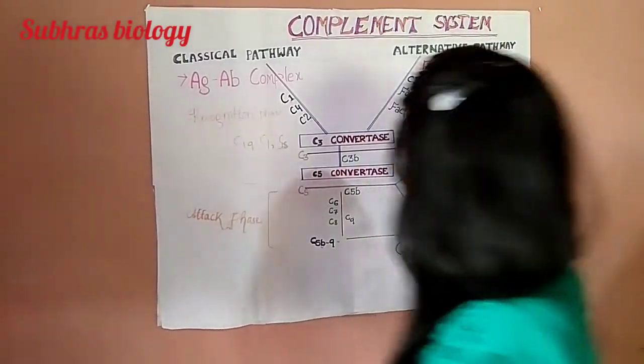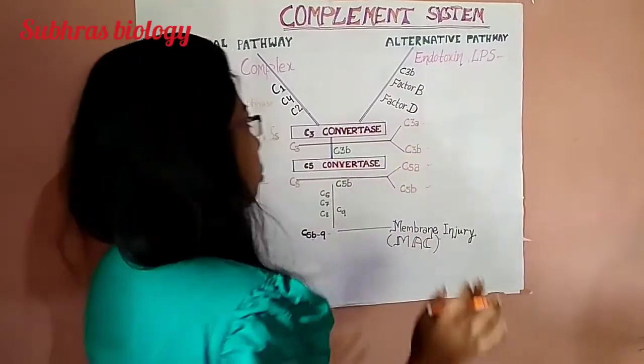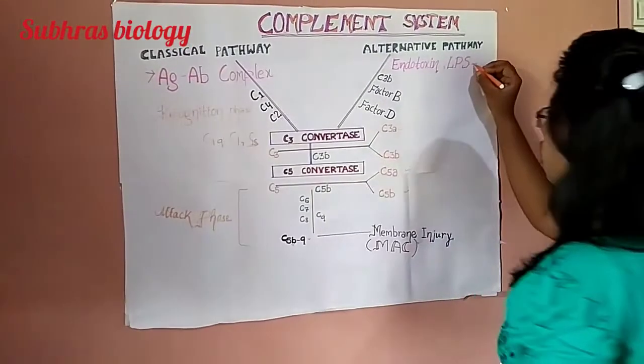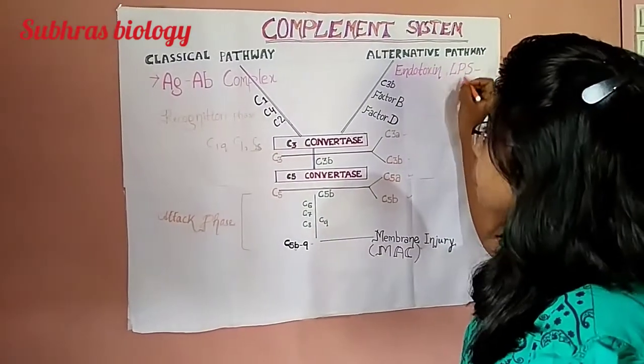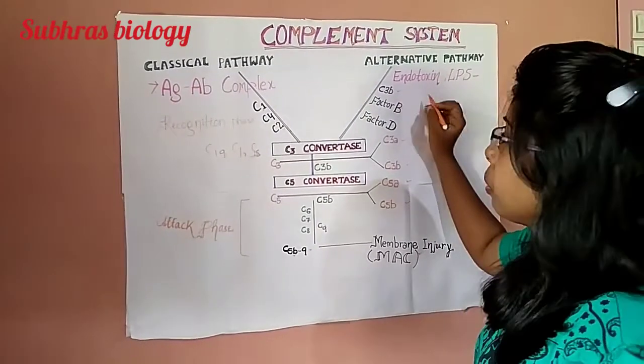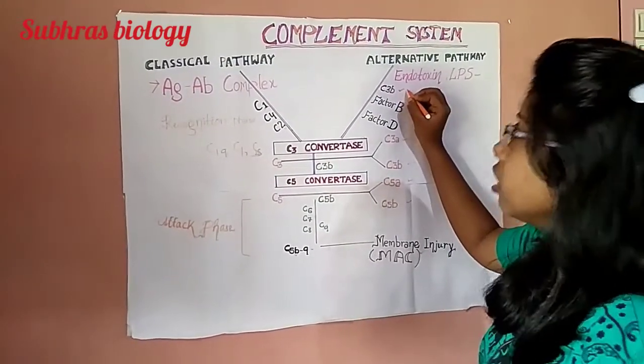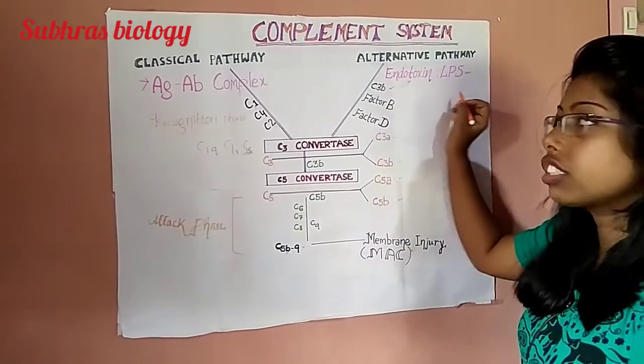But in alternative pathway, no specific antibody is required. Only endotoxin, lipopolysaccharides or yeast cellulins are necessary for the alternative pathway. Only C3B is the activator when attached with activators like lipopolysaccharides.